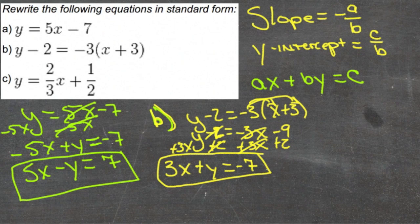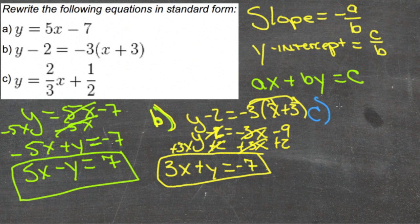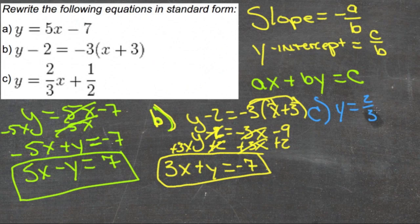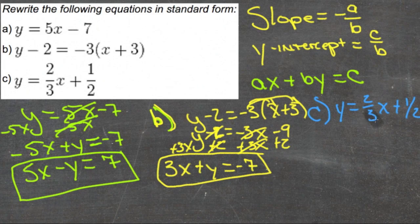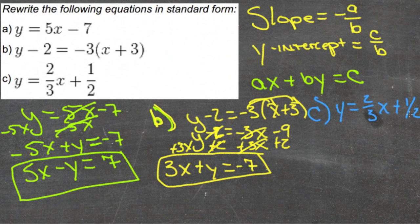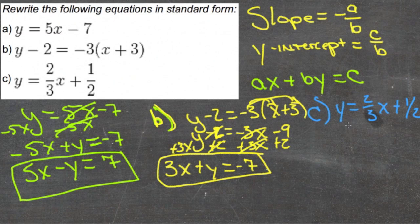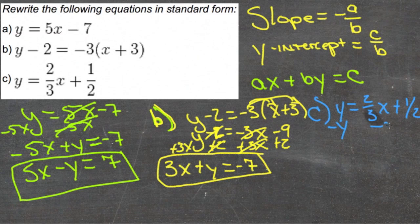Finally, for c, we have y equals two-thirds x plus one-half. Here the coefficient of x is already positive. So let's bring the y over and move the one-half the other way. We'll subtract y from both sides and subtract one-half from both sides.